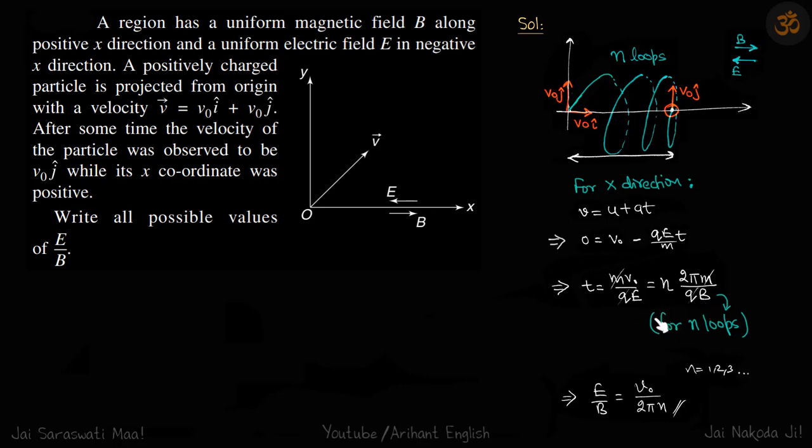We solve this and we get E by B equals v0 by 2πn, where n can be 1, 2, 3, depending on the number of loops. So this is our answer.